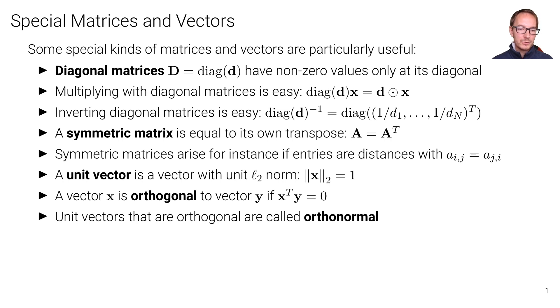Unit vectors that are orthogonal to each other are called orthonormal. This word is a composition of the word orthogonal and normal. So we say orthonormal.